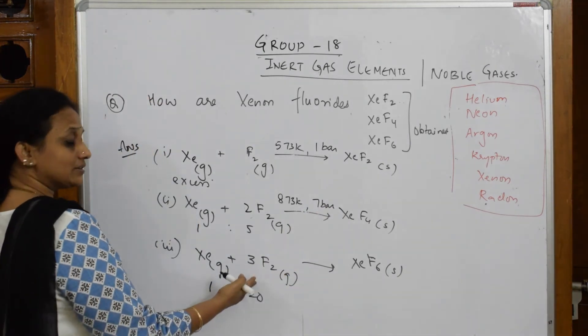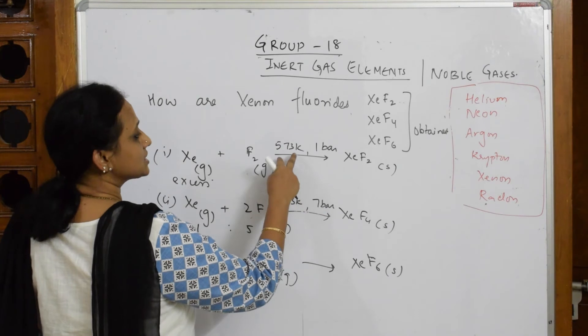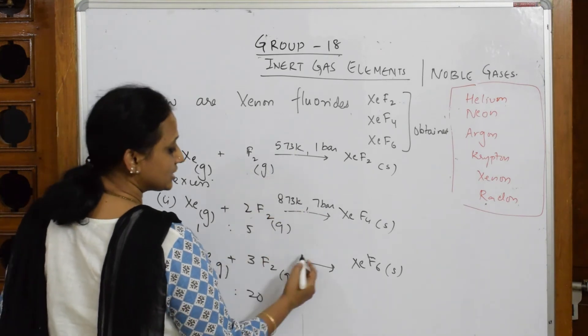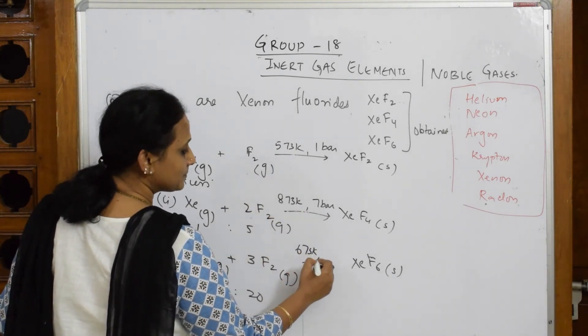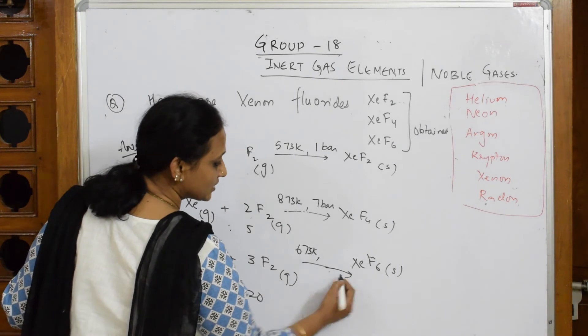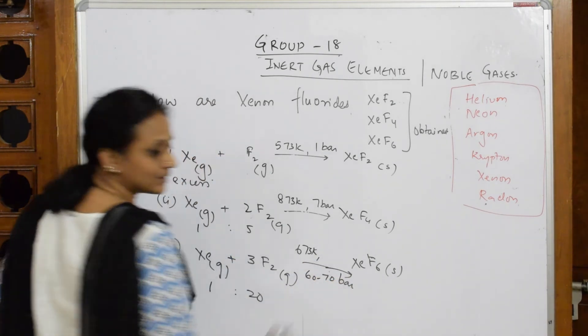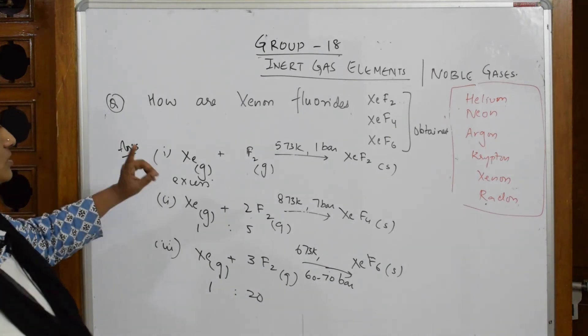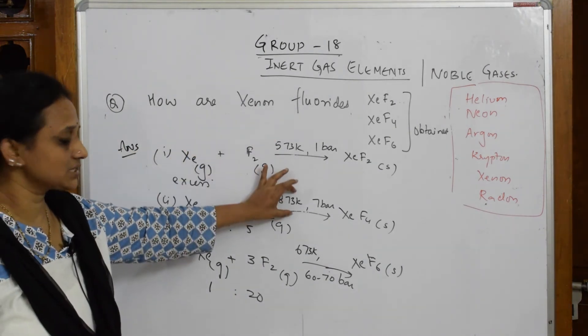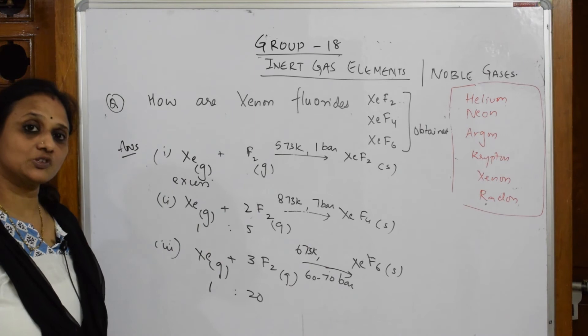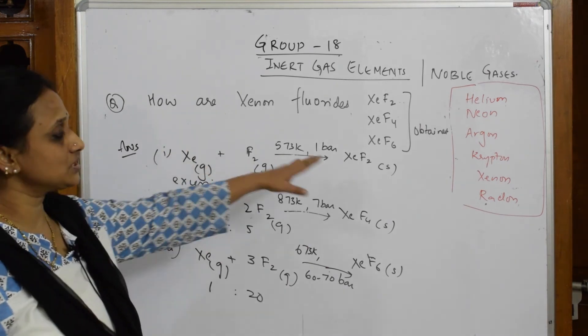When I have to prepare this, the temperature is a bit lesser—this is 573, this is 873. To make this, 673 Kelvin, but the pressure used is very high, 60 to 70 bar pressure is required. What do the examiners see? They're going to see this pressure because in the paper they may give you these two and the pressure and ask you to write the product.